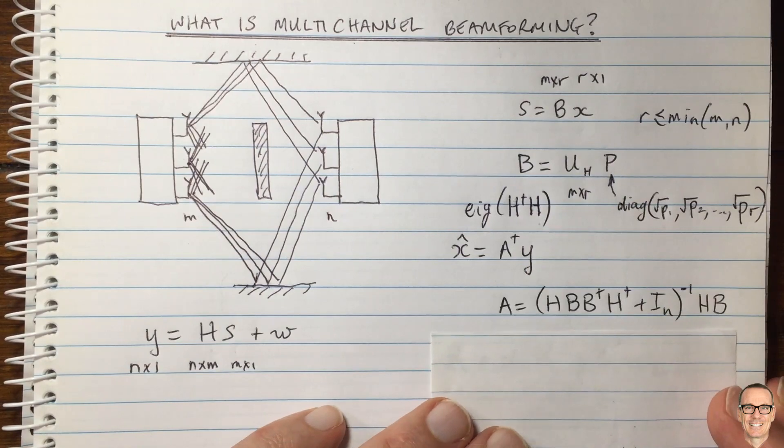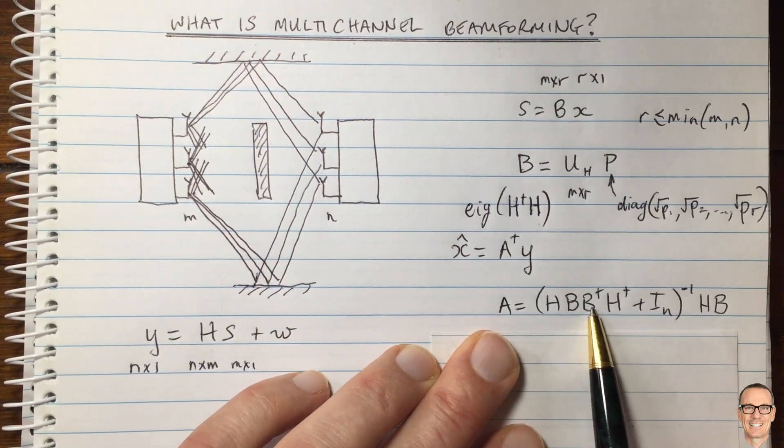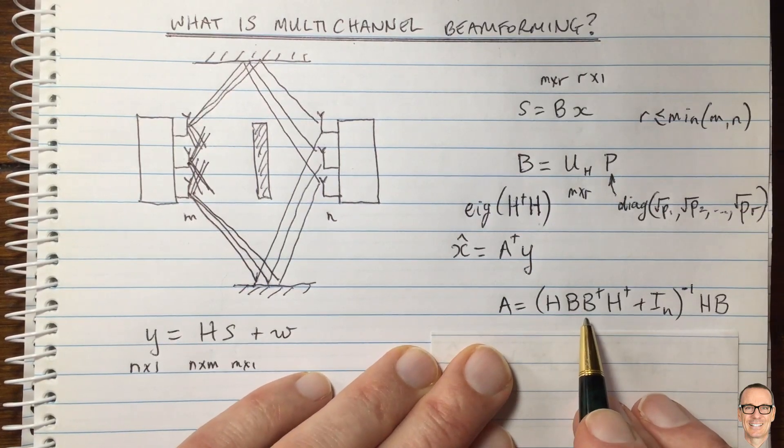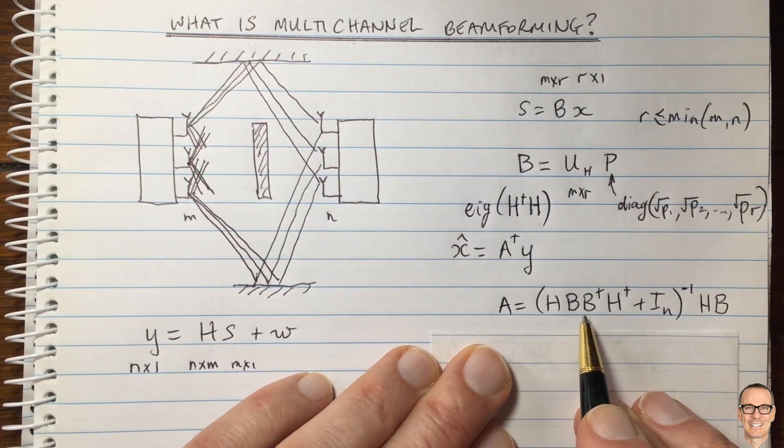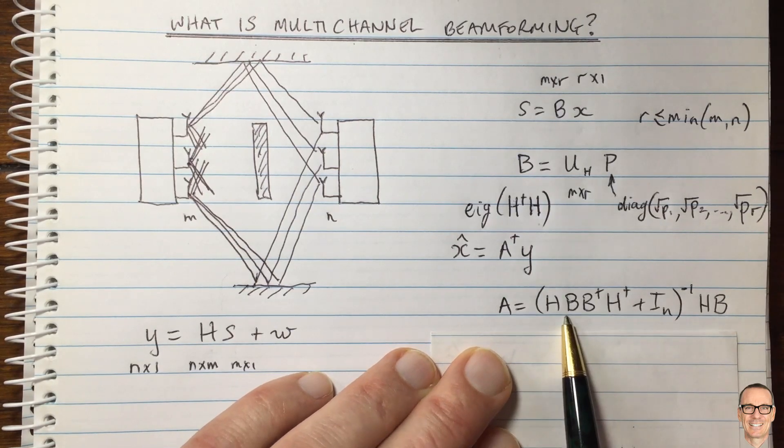So let's have a look at the value of A. This is the standard MMSE receiver. And for more information on MMSE receivers, again, look in the description below the video where you'll find links to other videos on the channel.